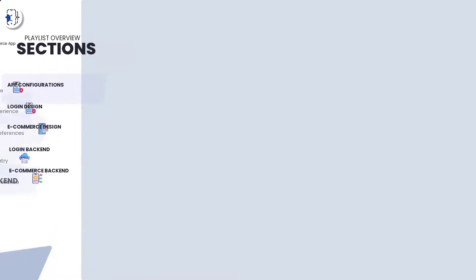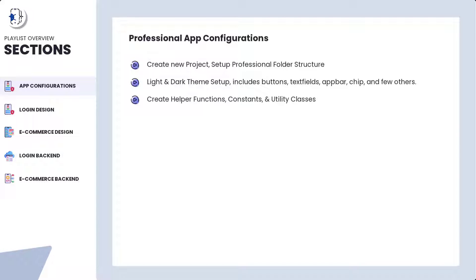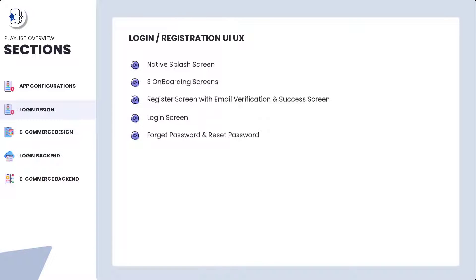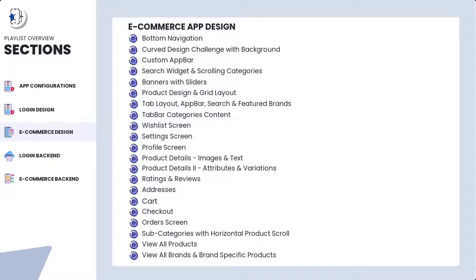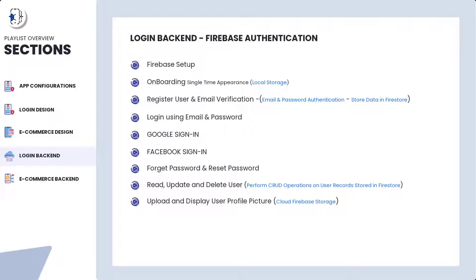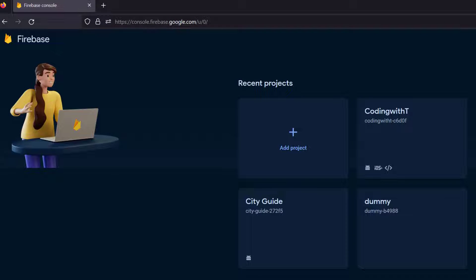We are creating a Flutter e-commerce application divided into five major sections. We have already covered the first three: setting up the Flutter project, designing folder structures, designing the login part, and in section three we designed the full e-commerce application. The complete code and playlist links are in the description. We are now starting section four, which is the first video of the backend.